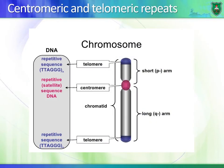Centromeric and telomeric repeats are repeated millions of times in specific regions of chromosomes. For example, telomeres are made of the sequence TTAGGG, and it's repeated millions of times. You also have these centromeric repeats as well.